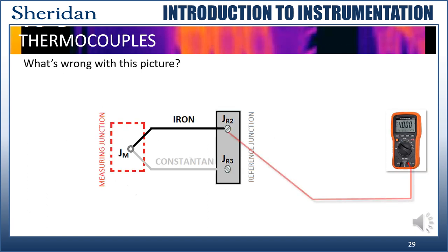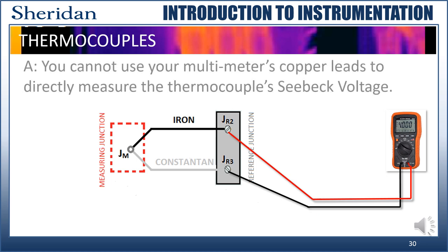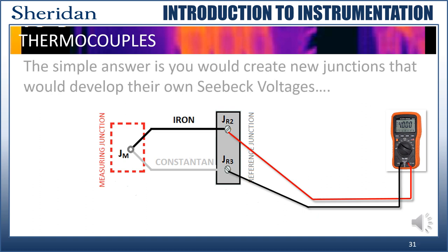Let's use some critical thinking. Tell me, what's wrong with this picture? The answer? You cannot use your multimeter's copper leads to directly measure the thermocouple's Seebeck voltage. Why? Well, the simple answer is, you would create two new junctions, and they would develop their own Seebeck voltages.